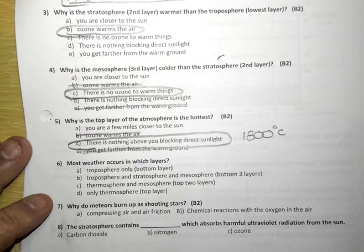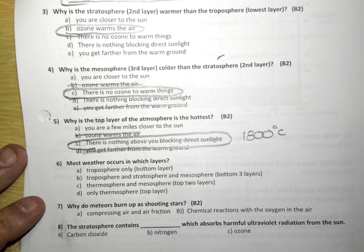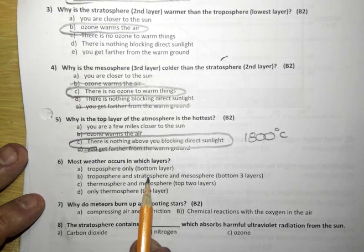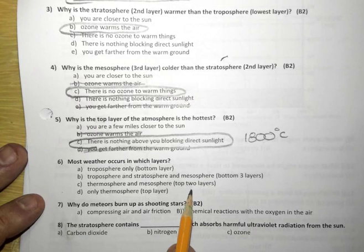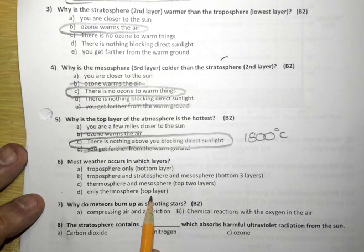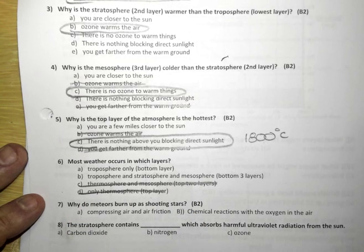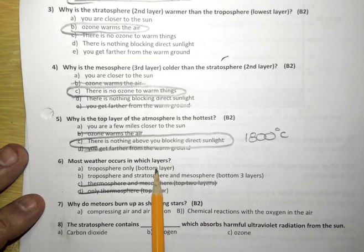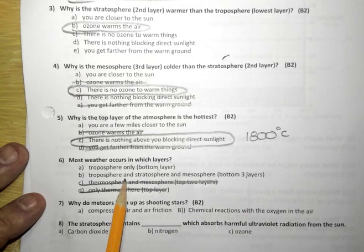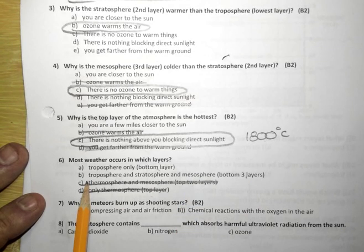Most weather occurs in which layers? When I mean weather, I mean clouds and rain and snow and all that kind of stuff. Where does that occur? Is it just the bottom layer? The bottom three layers? Just the top two layers? Or just simply the top layer? Well, we experience all sorts of weather down here on the ground, so obviously it's not just the top layer, and it's not just the top two layers, because we here at the bottom layer have it. So is it only the bottom layer, or is it the bottom three layers? Let's see here. Enrique, what do you think? A is the correct answer.